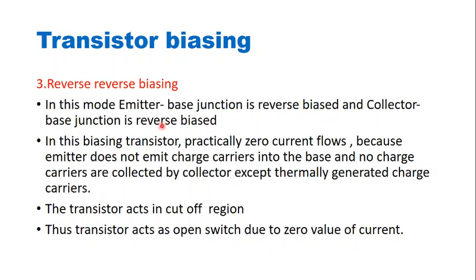In reverse-reverse biasing, both the emitter-base junction and the collector-base junction are reverse biased. Because both junctions are reverse biased, practically zero current flows, as the emitter does not emit charge carriers into the base and no charge carriers are collected by the collector. Only thermally generated carriers cause a small reverse saturation current. The transistor in this region acts in the cutoff region and behaves as an open switch.